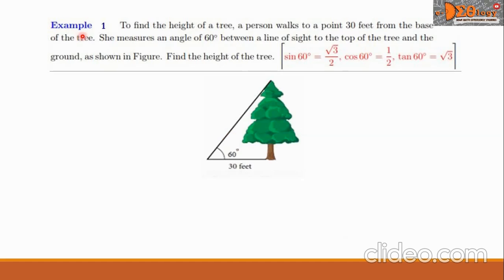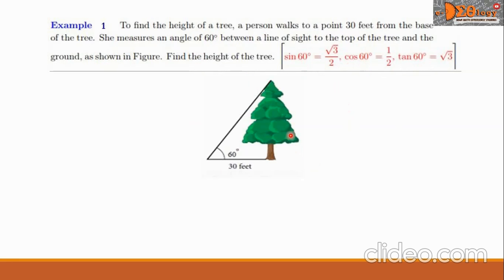Let us have example one. To find the height of a tree, a person walks to a point 30 feet from the base of the tree. She measures an angle of 60 degrees between a line of sight to the top of the tree and the ground, as shown in the figure. Find the height of the tree. Given here are the values for sine 60 degrees, cosine 60 degrees, and tangent 60 degrees.